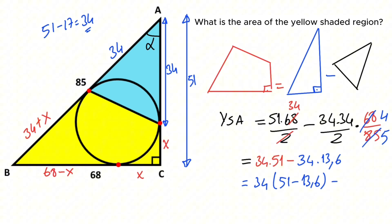That means yellow shaded area equals 1,271.6 units squared. Thanks for watching. If you want more videos like this, please don't forget to like and subscribe to my channel. Take care and bye bye.